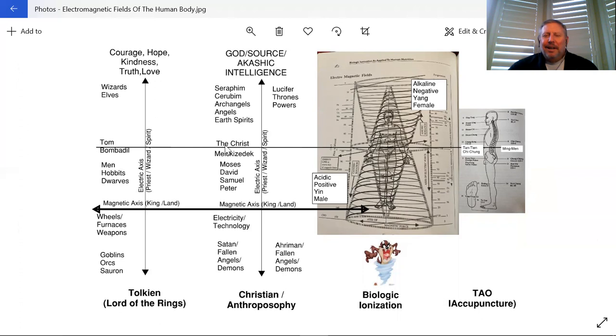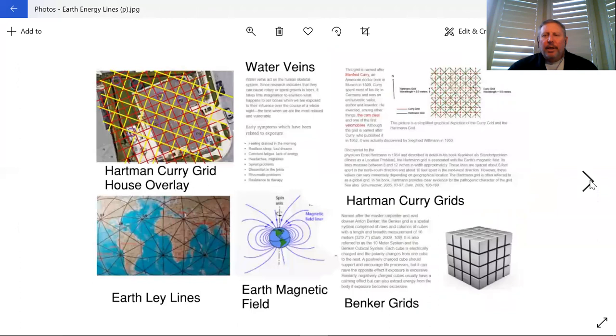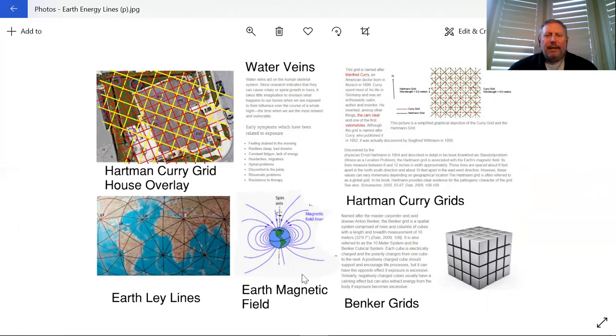It's interesting that if God incarnated in Christ, he chose to be a carpenter. We also talked about the different energy lines, the Hartman-Curry grid, the Benker grids, the earth magnetic field, water veins, earth ley lines, and how that might relate to a home.